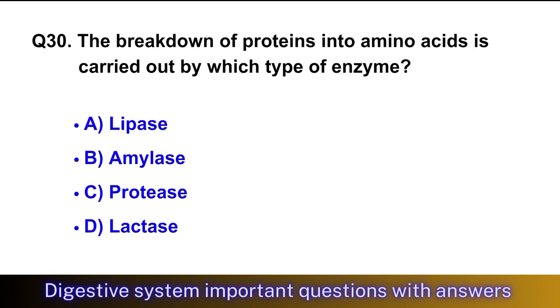Question No. 30: The breakdown of proteins into amino acids is carried out by which type of enzyme? The right option is option C, protease.